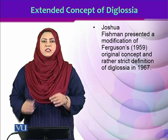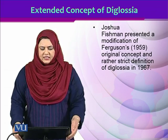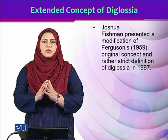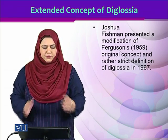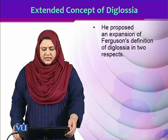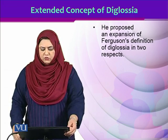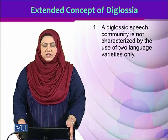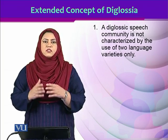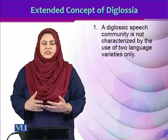The high variety has certain functions allocated to it and the low variety has another set of functions. The distinction was based on the fact that the two varieties share the same language. However, later on the concept was further extended — it was Joshua Fishman who extended the concept in 1967. He extended it in two ways. Firstly, a Diglossia speech community is not characterized by the use of two varieties only; according to Fishman, there can be more than two varieties — in fact, many varieties.